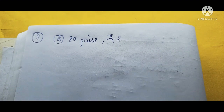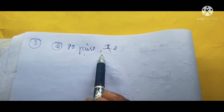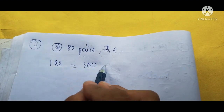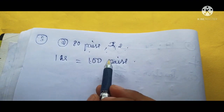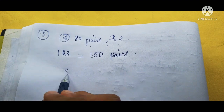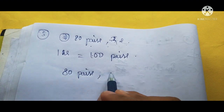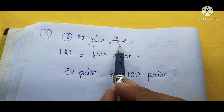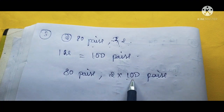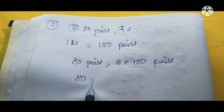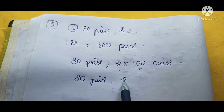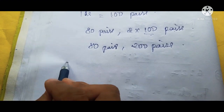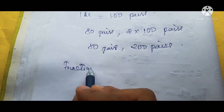Now we are going to do question 3A: 80 paise to rupees 2. In 1 rupee there are 100 paise, so we will convert rupees into paise. That is 80 paise, and 2 rupees becomes 2 into 100 paise, which is 200 paise.